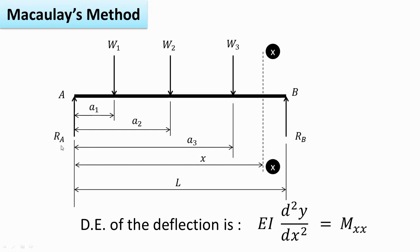The first step is always to find out the reactions Ra and Rb. The differential equation of deflection is EI d²y/dx² equal to the moment about section XX. This is the second order differential equation which we already know. To find out the moment about section XX, we require the perpendicular distances between W1, W2 and W3 up to section XX.